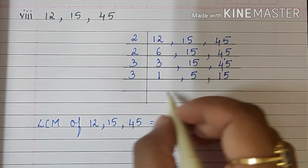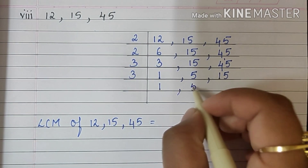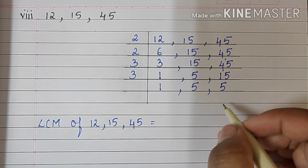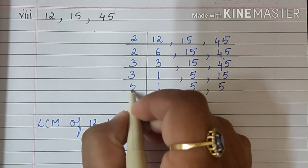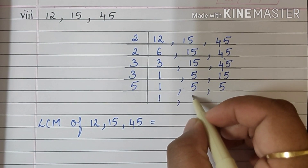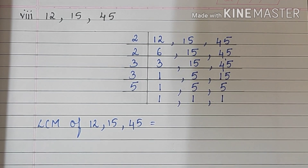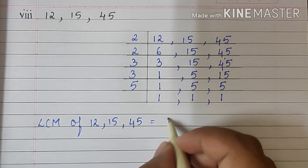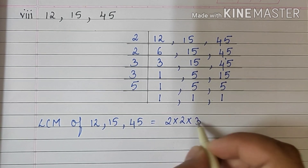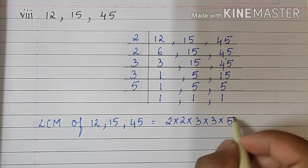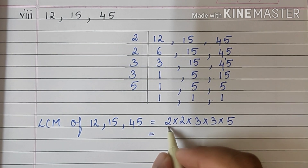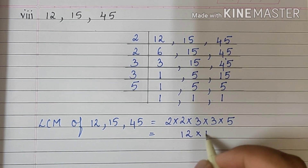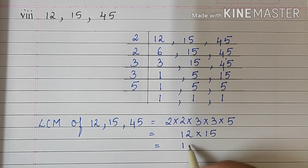Again 15 is divisible by 3, so we will again go with 3. We can also begin with 5 — no problem. So we will write here 5, and 3 5s are 15. Now we will go with 5. 5 1s are 5, 5 1s are 5, and 5 1s are 5. So the LCM of 12, 15 and 45 will be 2 into 2 into 3 into 3 into 5. 2 2s are 4, 4 3s are 12, multiplied by 3, 5s are 15, which is 180.